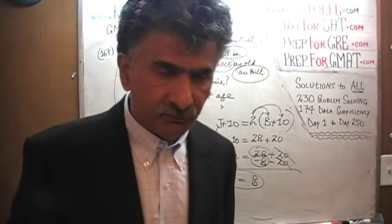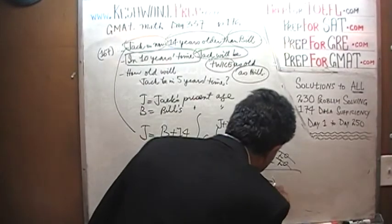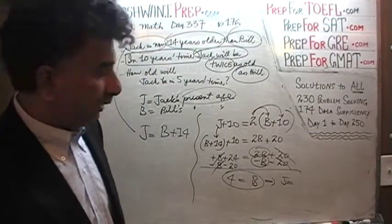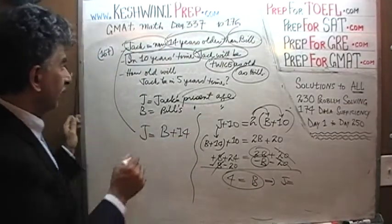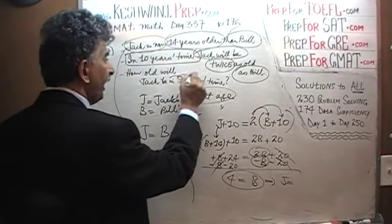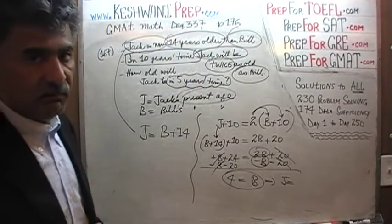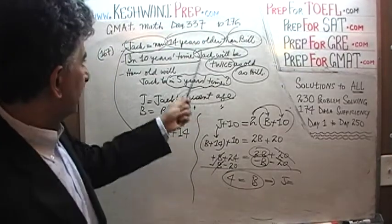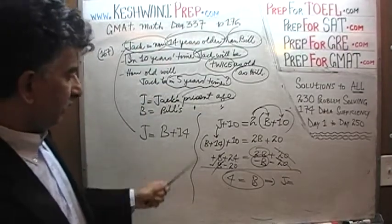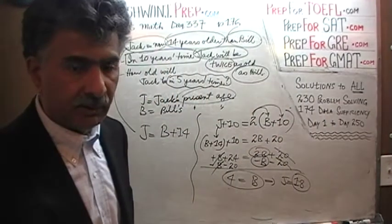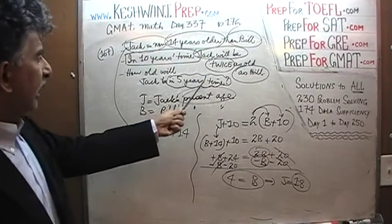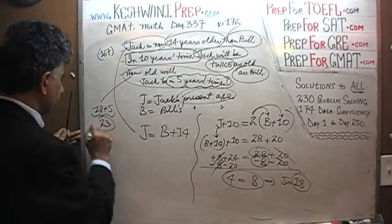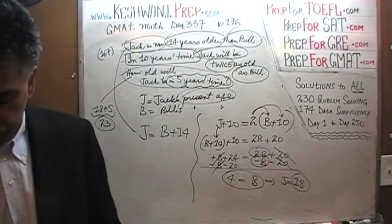B is 4. Bill's current age is 4 years. Which implies that J — remember J represents Jack's current age, his present age — that's not what the question is asking. The question is asking how old Jack will be in 5 years' time. Pay attention: they're asking for his age 5 years from now. J equals B plus 14, so he's going to be 18. He is 18 right now. And the answer to 'how old will Jack be in 5 years' time' — in 5 years' time he's going to be 18 plus 5, or 23 years old. Jack will be 23 years old.